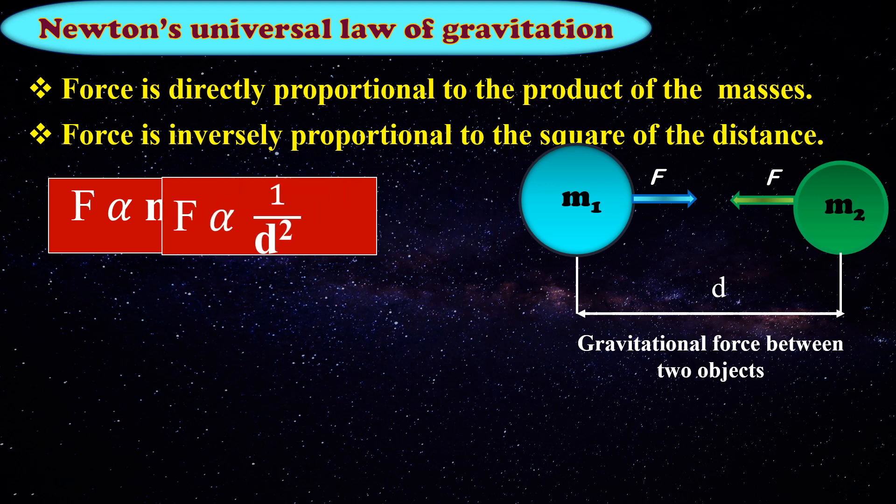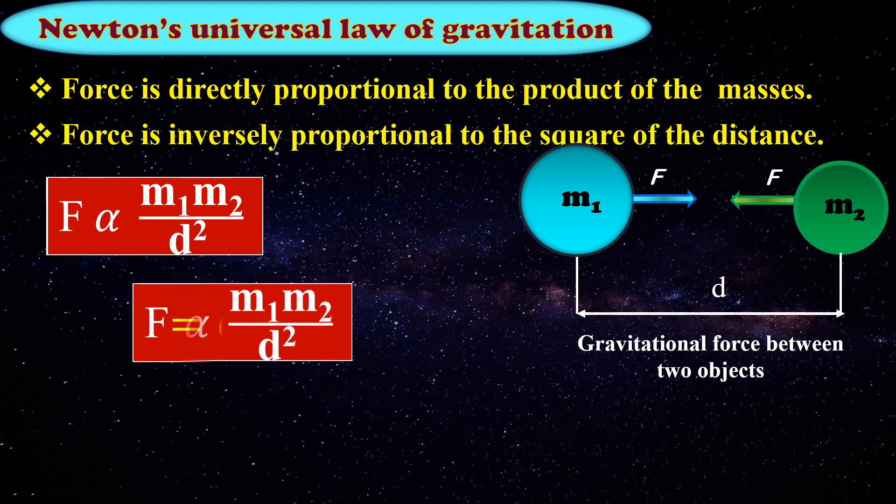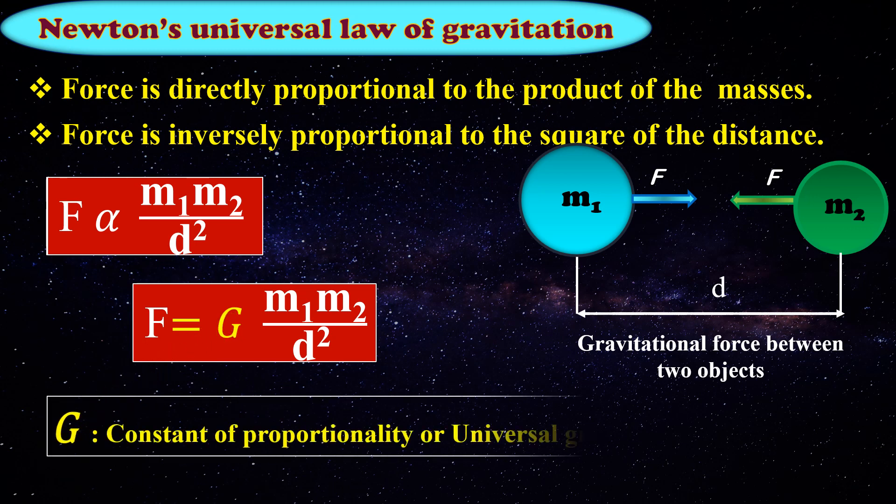When both are combined, we get F proportional to M1·M2 by D². Let's replace the proportional sign with constant G. Therefore, F equals G·M1·M2 by D², where G represents the constant of proportionality or universal gravitational constant.